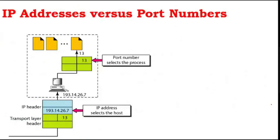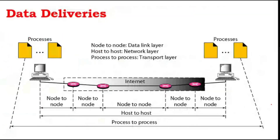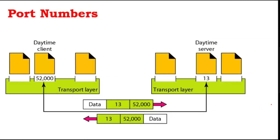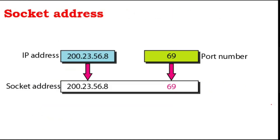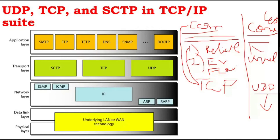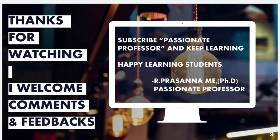So now we have seen: what is process-to-process delivery, what are port numbers, well-known port numbers, the difference between IP address and port numbers, socket address — and I have explained clearly what is TCP and what is UDP.